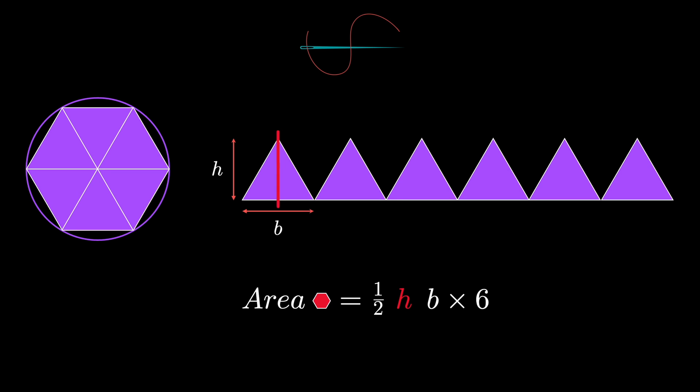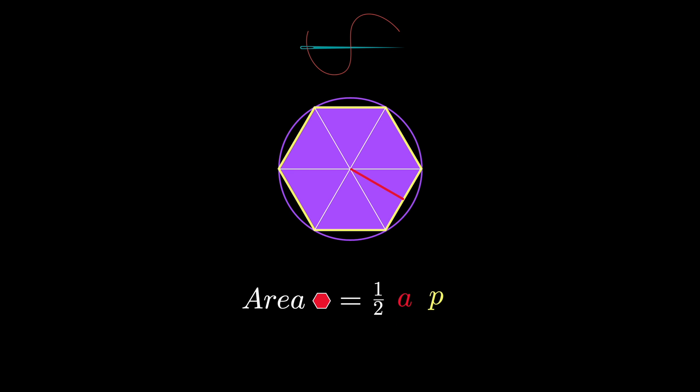Now H is the height of the triangle, but it is also the distance between the side of the hexagon and its center, which is known as the apothem of the polygon, and we will write it for short as A. B is the base of the triangle. B times six is the combination of the bases of all six triangles, which is also the perimeter of the hexagon, and we will write it for short as P. Therefore, the area of a regular hexagon, or any regular polygon, is half its apothem times its perimeter.